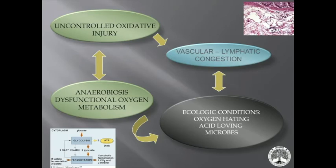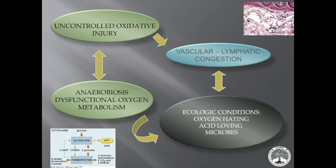When we have uncontrolled oxidative injury, you see that in patients — you look at their eyes, they're starting to get caked over, periodontal disease, a slow deterioration in their system. It's insidious, it's imbalanced. You have to try to slowly turn that ship. We see the vascular beds and lymphatics starting to become congested — they're not functioning right. We get into what's called anaerobiosis, dysfunctional oxygen metabolism. As you become more acidic in nature, you're not utilizing oxygen properly and you start to shift into a different metabolic state.